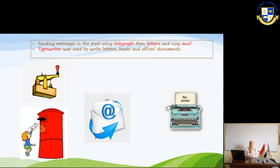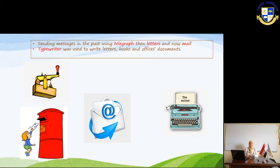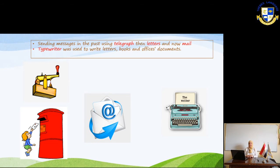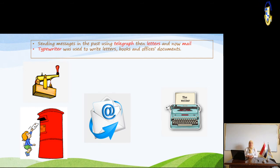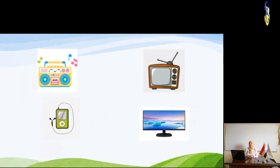How did we send messages in the past and how do we send them nowadays? In the past we used the telegraph, then letters, then mail. Nowadays we use email — the fastest way to send messages. You can also see the typewriter, which was used to write letters, books, and office documents.